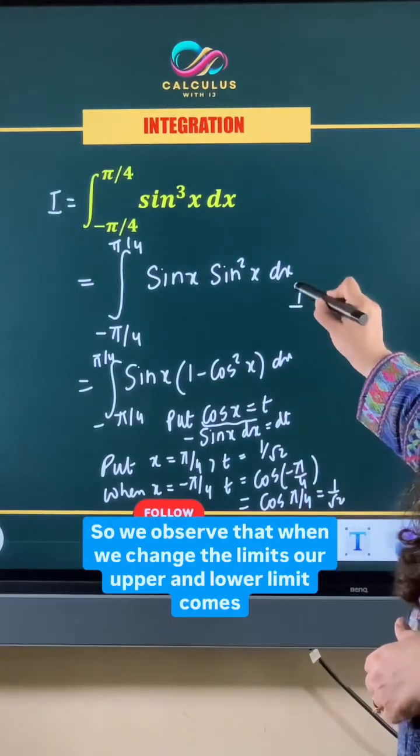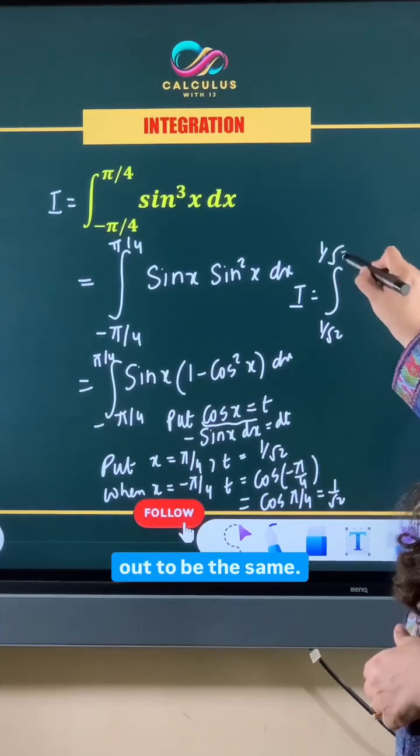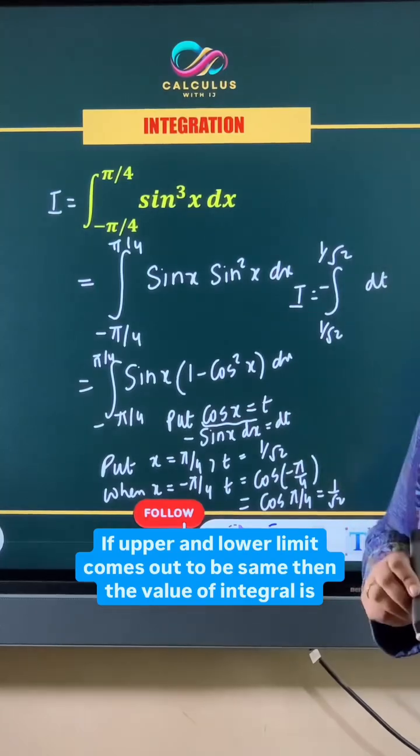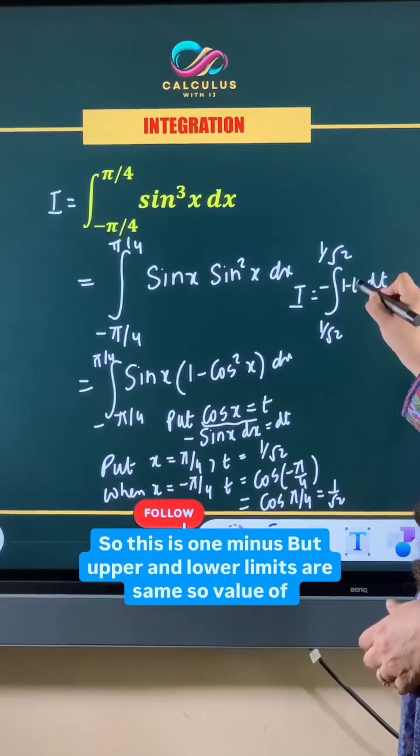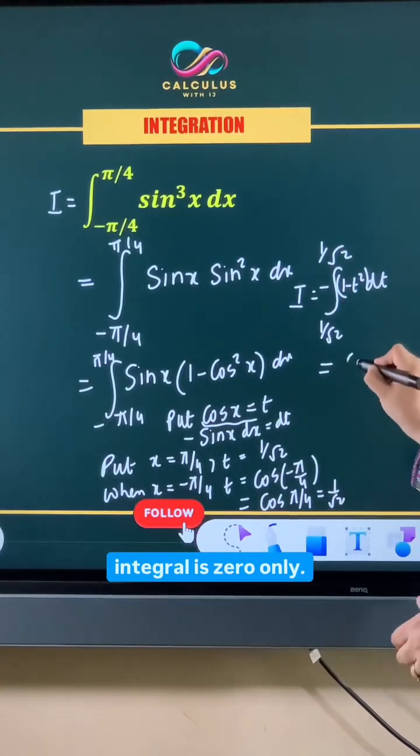We observe that when we change the limits, the upper and lower limit comes out to be the same. If upper and lower limit comes out to be the same, then the value of integral is 0 only. So this is 1 minus t square dt but upper and lower limits are same, so value of integral is 0 only.